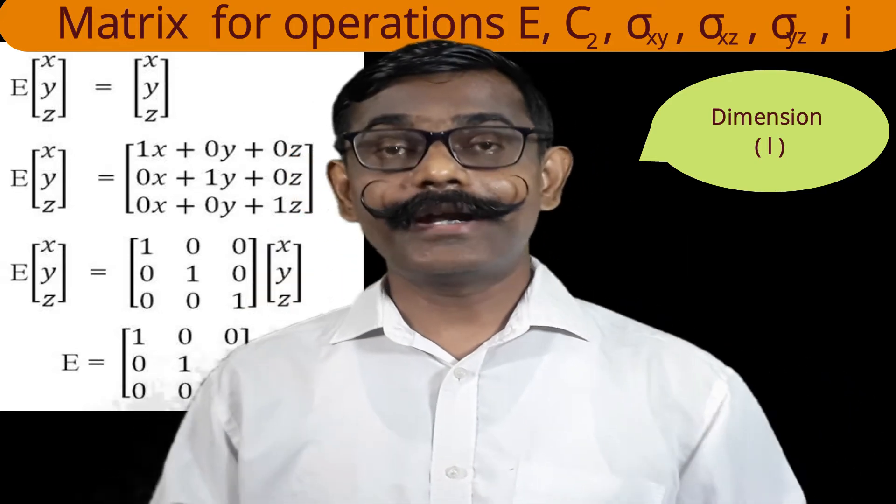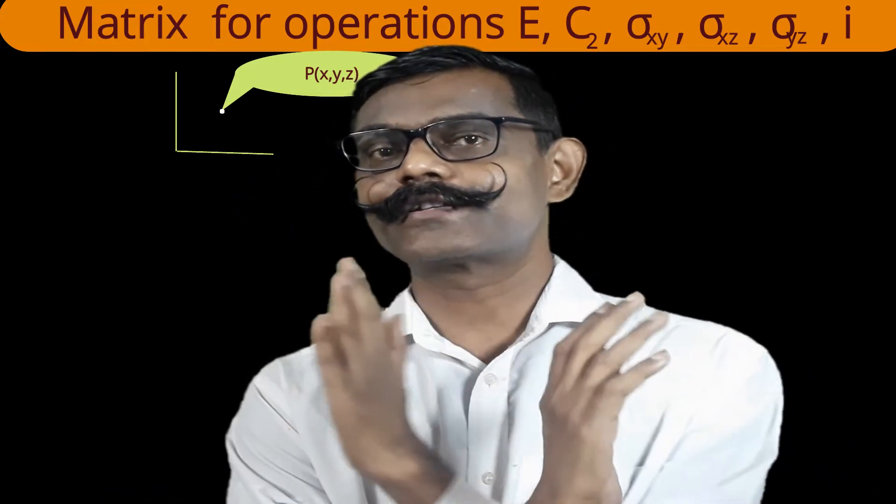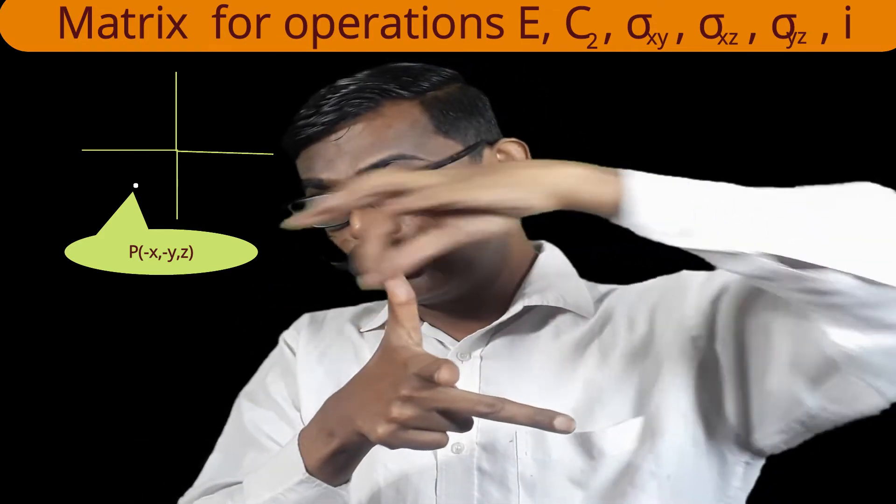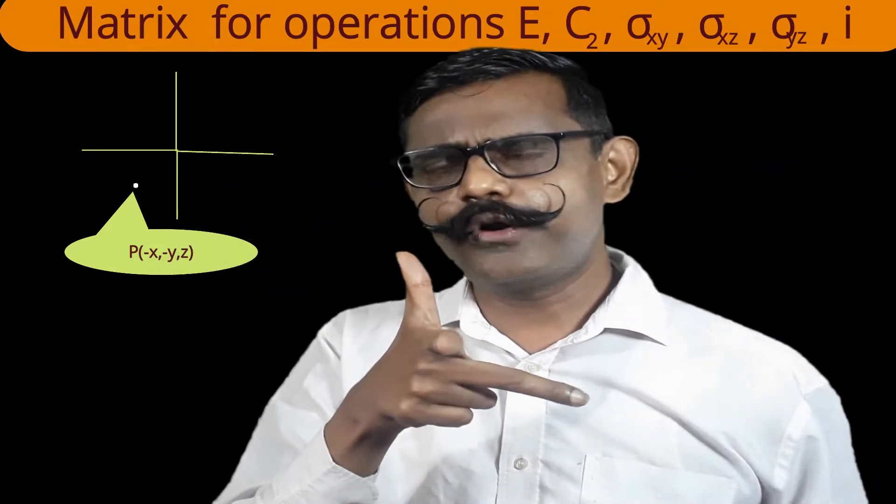In the similar way, let us find the matrix for rotation by 180 degrees, that is the C2 operation, as found in the water molecule. For C2, I consider one point in the three-coordinate system with all positive coordinates x, y, z. After 180-degree rotation — I am rotating this point, considering it as a vector — the point which was in the first quadrant will come to the third quadrant in the x-y projection. So this point will come to this position. Now let us find coordinates one by one.